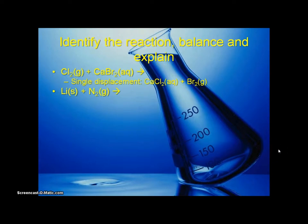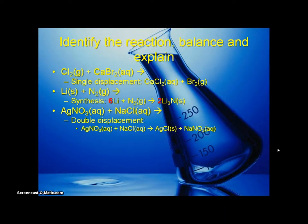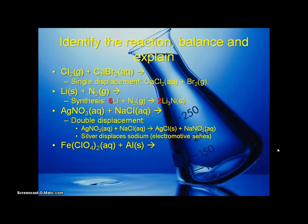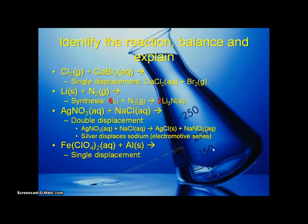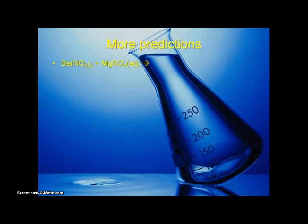Silver nitrate and sodium chloride is a double displacement — here's the balanced equation. Iron perchlorate and aluminum is a single displacement; here's the balanced equation, and aluminum displaces iron.